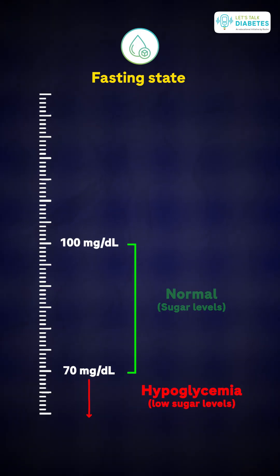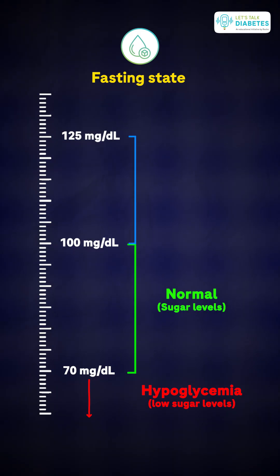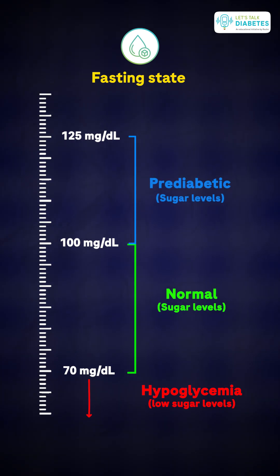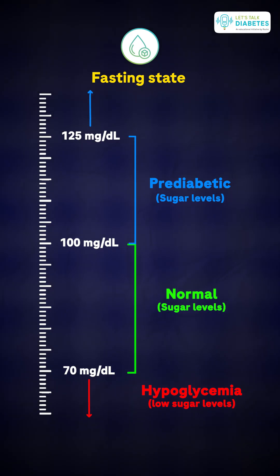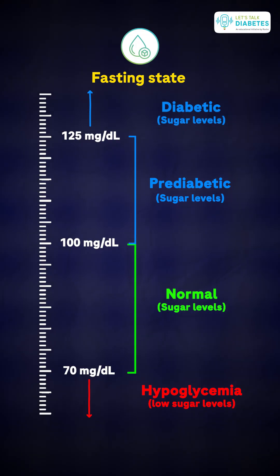Normal fasting values are between 70 to 100 milligram percent. From 100 milligram percent to 125 milligram percent, the values are called pre-diabetic levels. Beyond 126 milligram percent of fasting glucose levels, a person is labelled as diabetic.